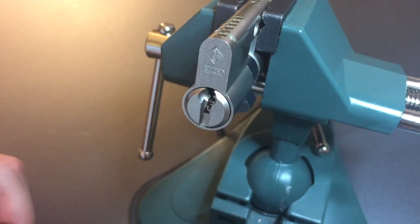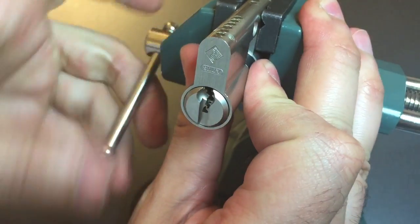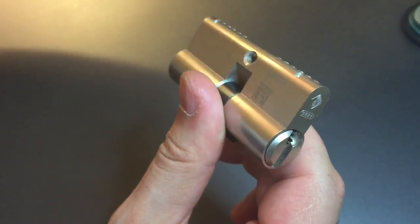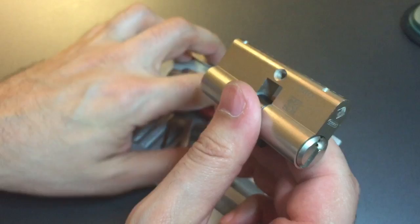But we're going to leave it right like that, because that's the position we need it for for the gutting. So, let's take this guy apart, and you can take a look at a relatively complex lock.